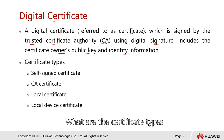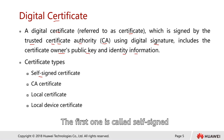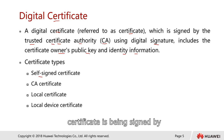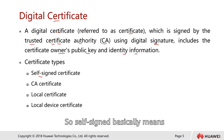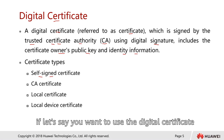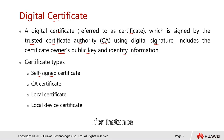Now, what are the certificate types? Basically we have four types of certificates. The first one is called self-signed. Typically certificates are signed by the trusted third-party certificate authority. Self-signed basically means if you want to use the digital certificate just for private use, for instance.